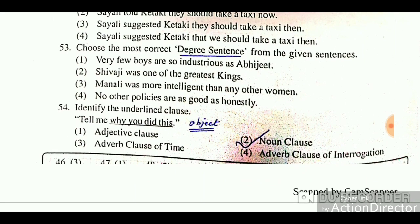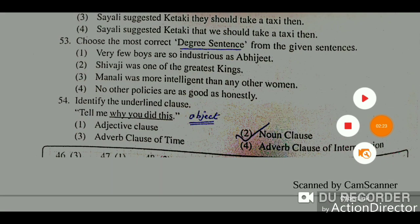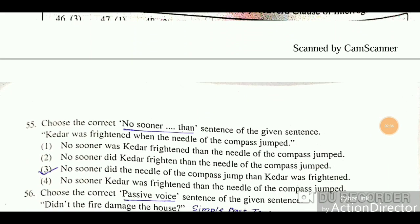Identify the underlined clause: 'Tell me why you did this.' The underlined part functions as an object in the sentence. Since it acts as the object, this is a noun clause (noun phrase functioning as object). Option 2 is the correct answer.